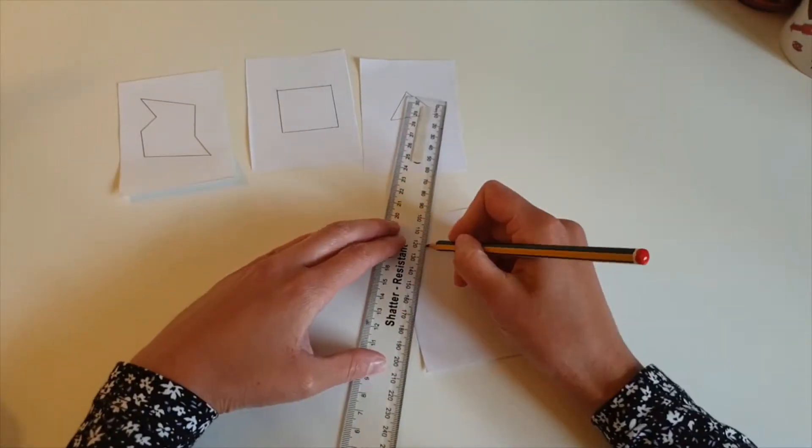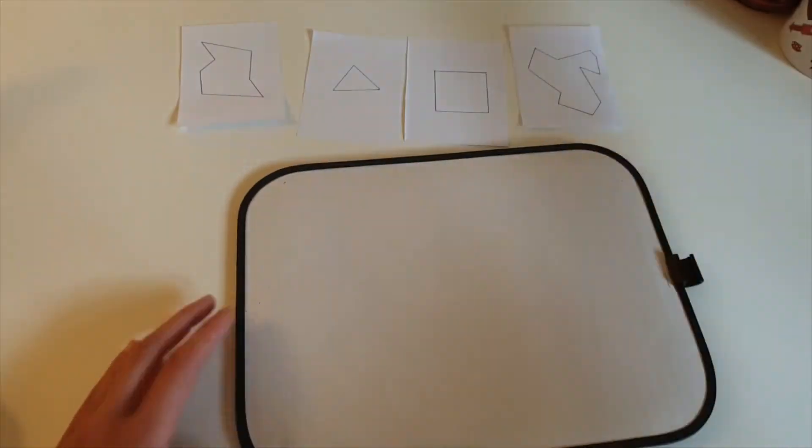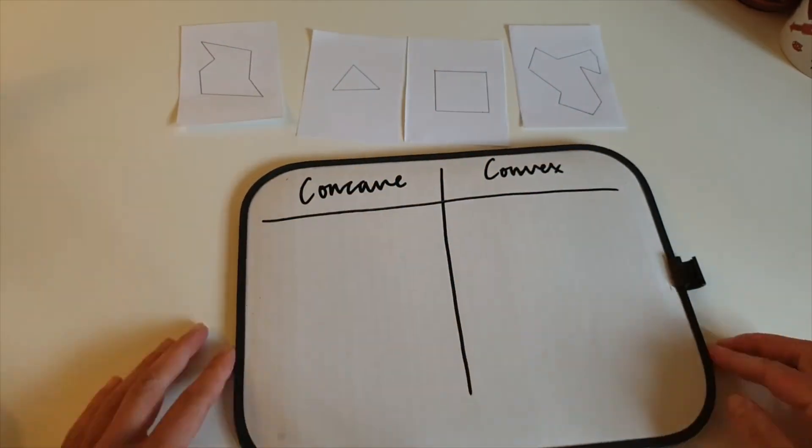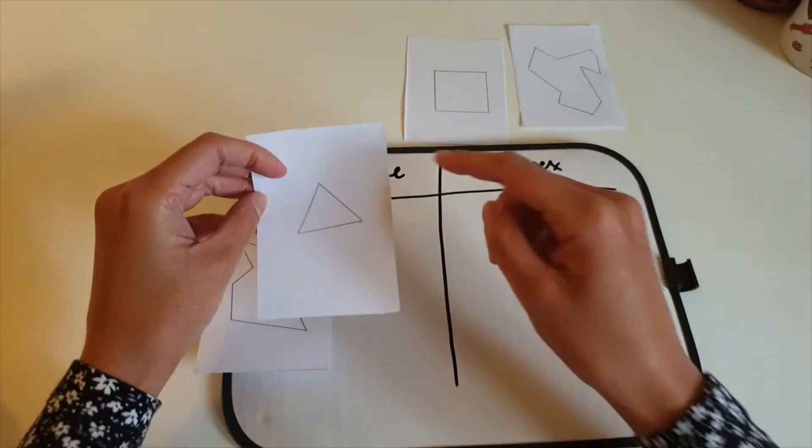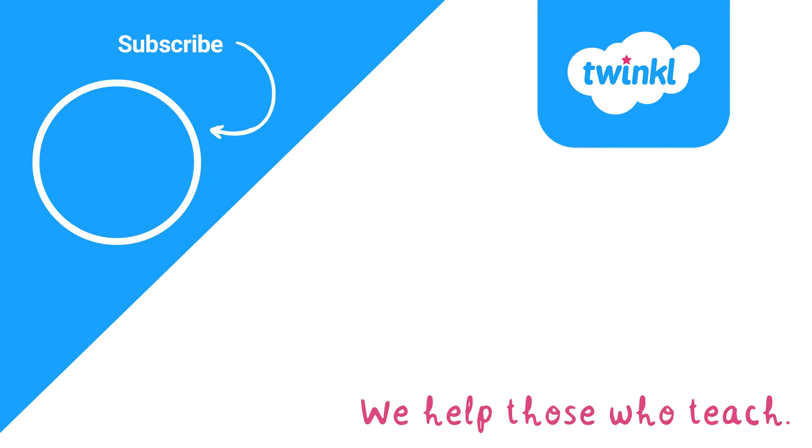You can encourage children to think of a range of regular and irregular polygons for a friend to identify and sort. I hope you found this video and the type of activities helpful. So thank you for watching and see you soon.